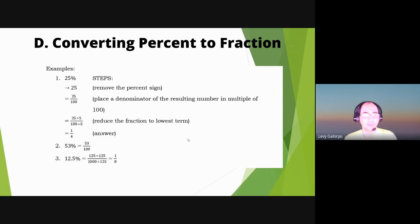Sa una, we have 25%. So yung 25%, remove natin ang percent sign, so naging 25. So mag-place tayo ng 100 as denominator. So 25 over 100, and then we select 5 as the greatest common factor. So 25 divided by 5 over 100 divided by 5. Ganun siya. So reduce the fraction to lowest term. Ang sagot ay one-fourth. So that's easy class, ganun lang siya kadali.